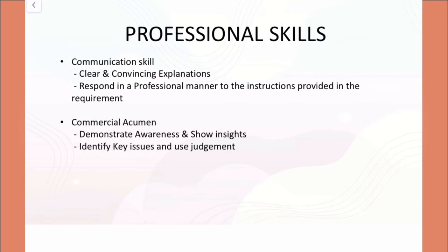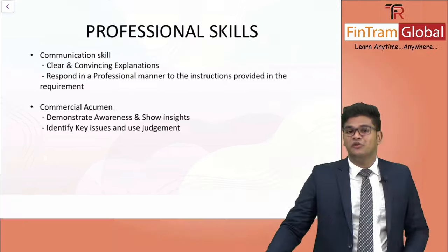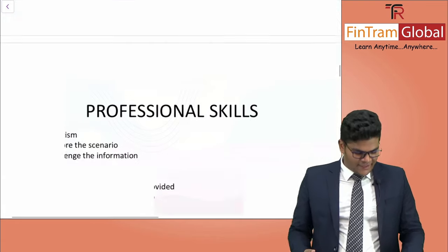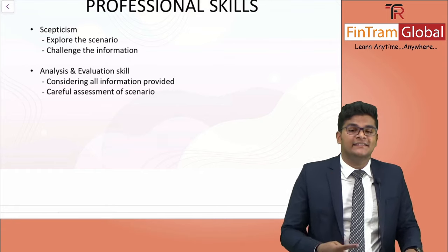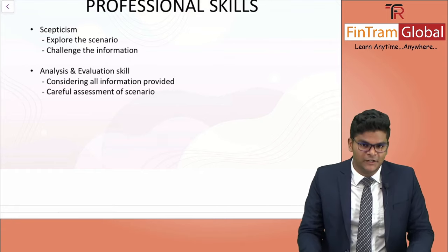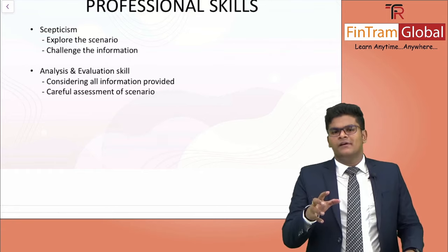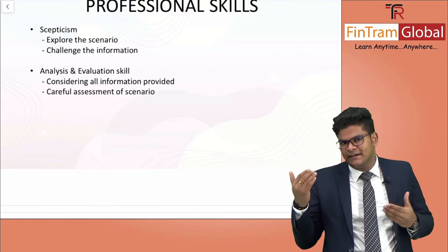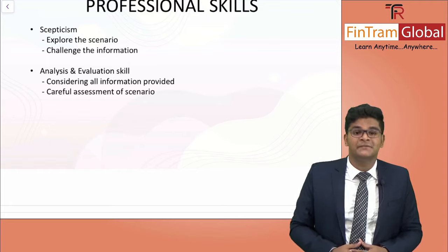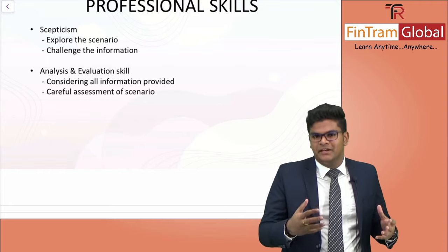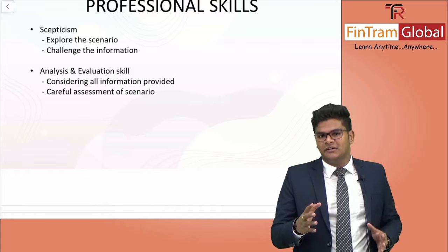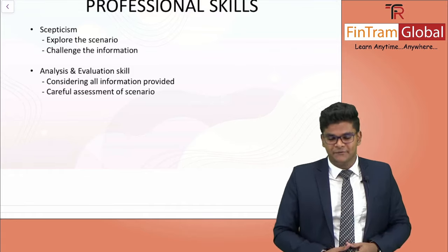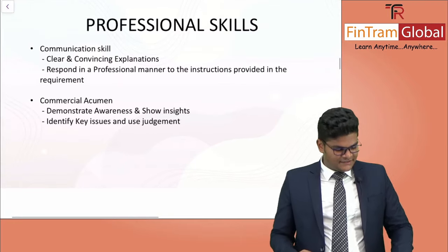Moving on to the professional skills — the first skill we're going to look at is communication, then commercial acumen, then skepticism, and analysis and evaluation. After hearing these skills, it's kind of familiar to what we've looked at in the SBL paper. We're applying it in a different manner when it comes to Advanced Performance Management. Let's take a look at each of these skills one by one.